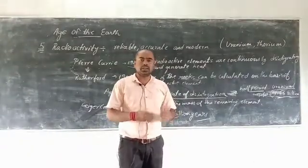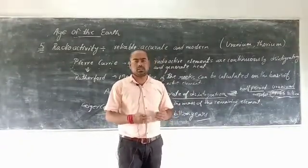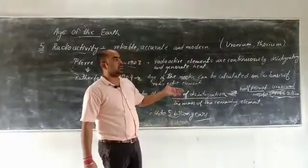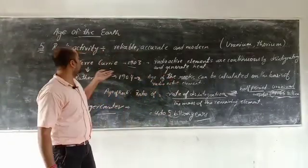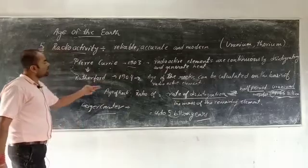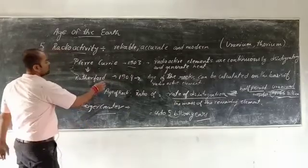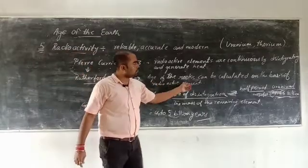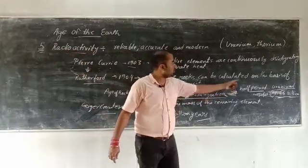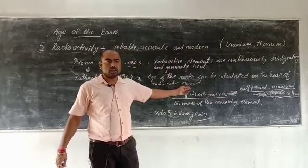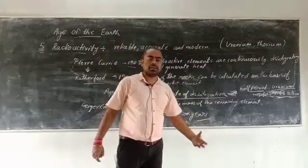That means radioactive elements continuously break down themselves because of chemical reactions. Later, during 1904, Rutherford said that the age of the Earth can be calculated on the basis of radioactive elements.